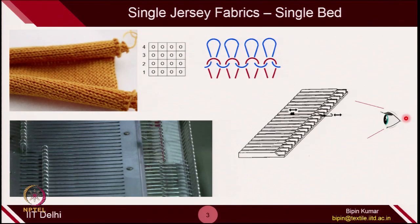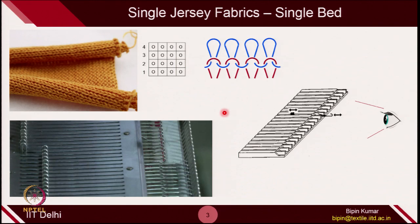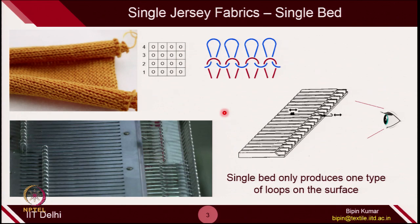So if you are watching in front of the machine, you will observe that it is catching the yarn and making the loop on the back side. Since all the needles placed on this particular bed have the same nature of movement, all the loops created by each single needle will have the same nature — either it will be technical back if you are watching from this side, or technical front if watching from the opposite side. Due to the nature of placement of needles on a single bed, a single bed can only produce one type of loop on the surface. Such fabrics are called single jersey fabrics.